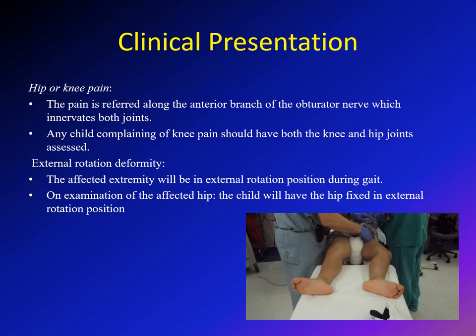Another feature is external rotation deformity. As seen in this photo of one of my patients with bilateral SCFE on the table for surgery, you can see the amount of external rotation. The affected extremity will be in external rotation during gait. When you flex the hip on exam, you will find the hip going into an external rotation position.